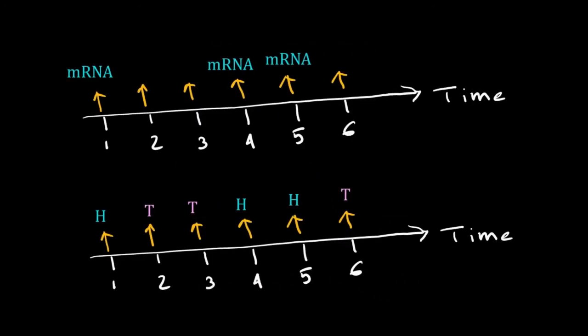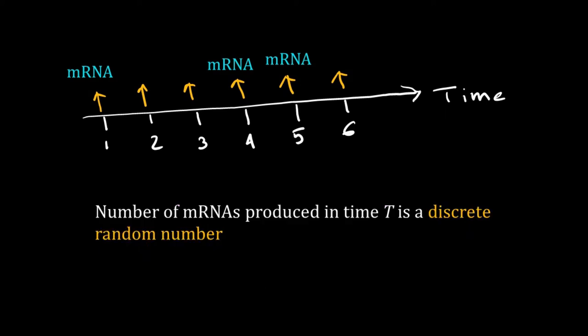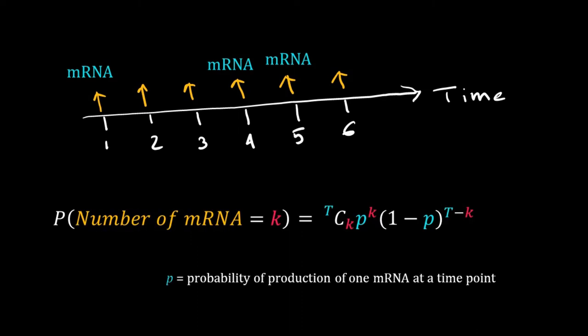Take the example of transcription. Consider time as discrete: t equals 1, 2, 3, up to n. At each time point, either an mRNA is produced or nothing happens. Each time point is equivalent to a coin toss, and producing one mRNA is equivalent to getting a head. Therefore, the number of mRNAs produced in time t is a discrete random variable that follows the binomial distribution. The probability of k mRNAs at time t is given by the PMF of the binomial distribution, where p is the probability of producing one mRNA at one time point.